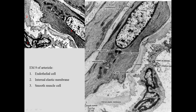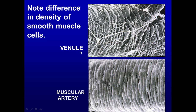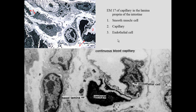In this little arteriole we have one, two, three smooth muscle cells. If you look at a venule, there are fewer smooth muscle cells around the cavity than in an arteriole — the arteriole has a high density of smooth muscle cells and a thick media, while the venule has a more thin media. In a capillary, endothelial cells line the vessel; following the basal lamina you find a cell inside it — this is a pericyte.